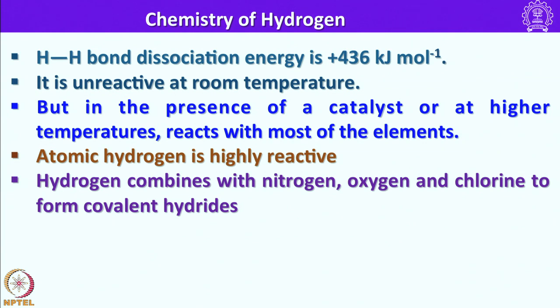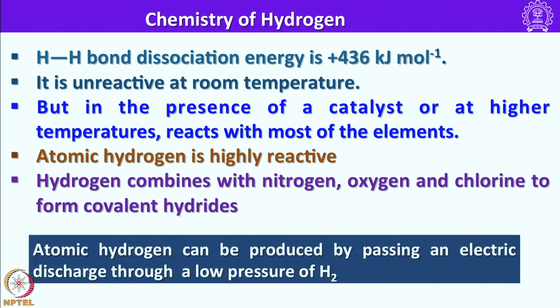Let us look into the chemistry of hydrogen. Hydrogen exists as a dimeric species and the H–H bond dissociation energy is +436 kJ/mol. It is unreactive at room temperature, but in the presence of a catalyst or at higher temperature it reacts with most elements in the periodic table. At higher temperature it reacts violently with oxygen to form H2O. Atomic hydrogen is highly reactive and hydrogen is capable of combining with nitrogen, oxygen, and chlorine to form covalent hydrides.